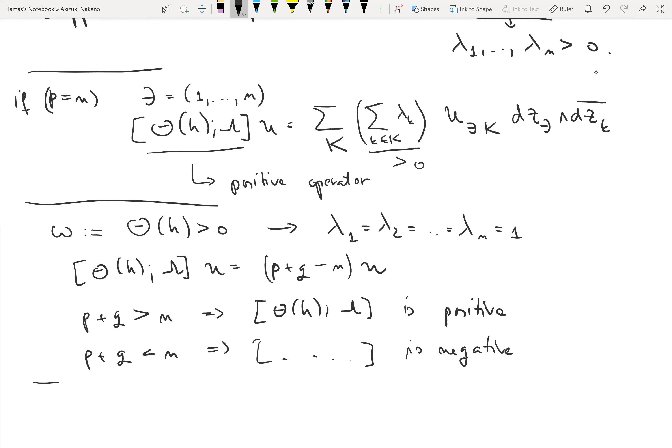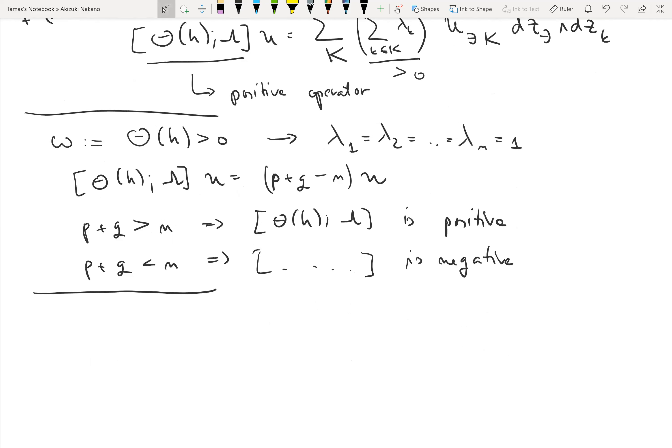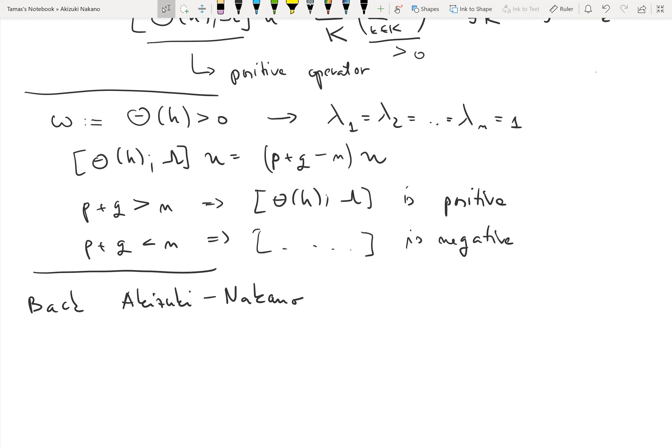This induces some simplifications. In particular, all the eigenvalues here are going to be one. If I stare at this expression, everything is one, so I will have a very simple expression for this commutator. It will be nothing but (p+q-n)u.